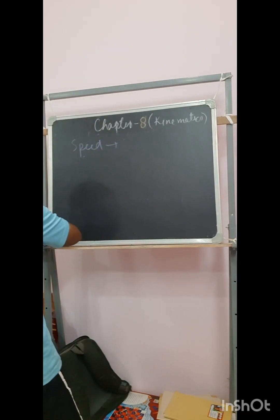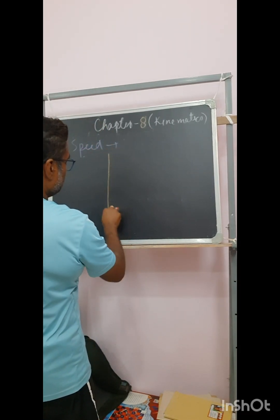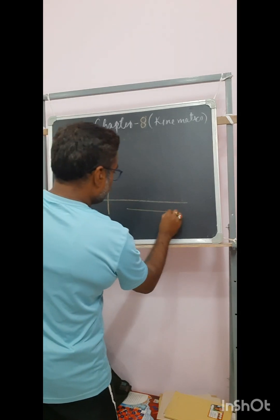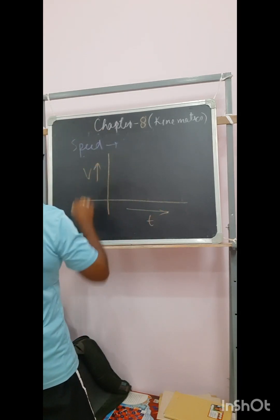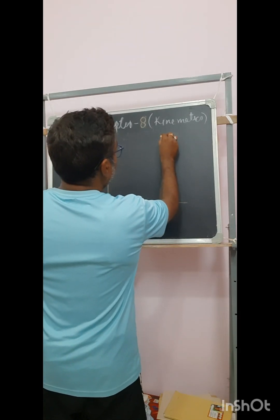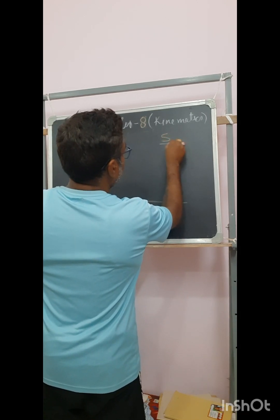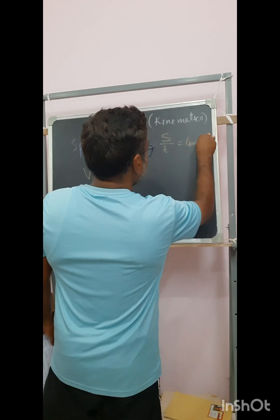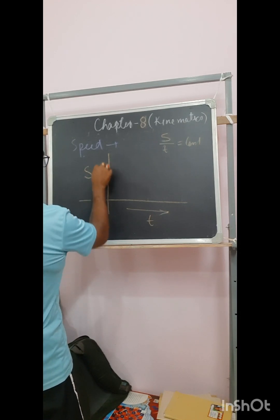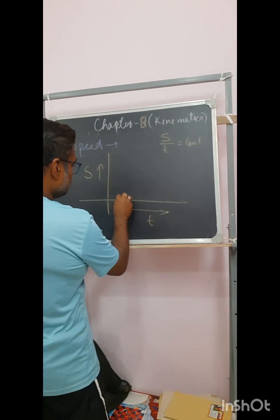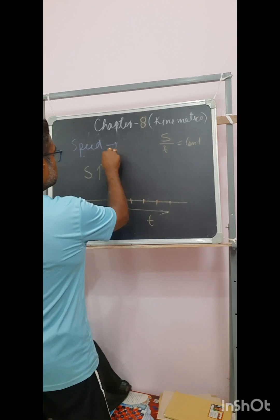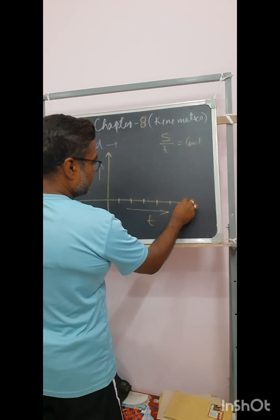If I want to draw the motion in respect to time and velocity v, when it is a uniform motion, that means when s by t is equal to constant. If I plot s by t, s is the displacement, the y-axis is s and the x-axis is t.